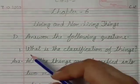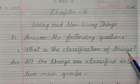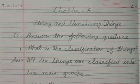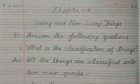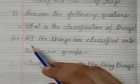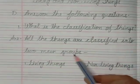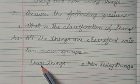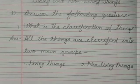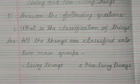The first question is: what is the classification of things? As I taught you in the lesson, things can be classified into two groups. All the things are classified into two main groups: one is living things and the second one is non-living things.